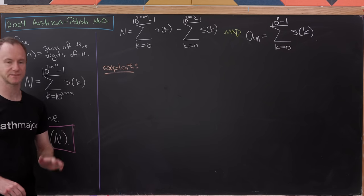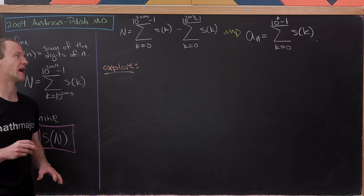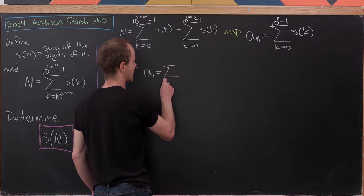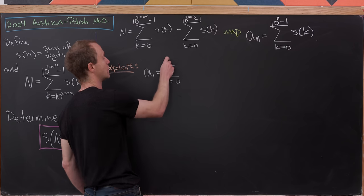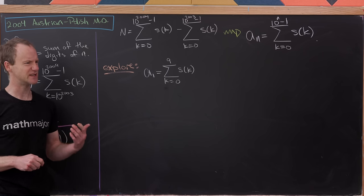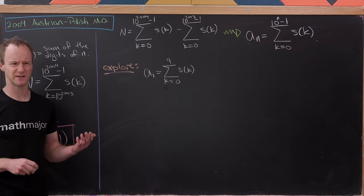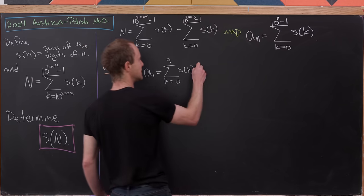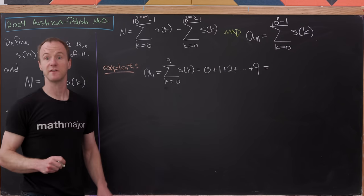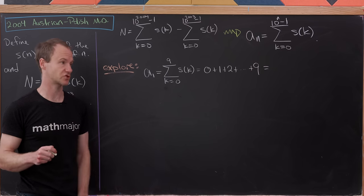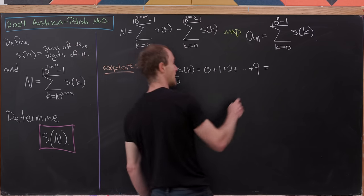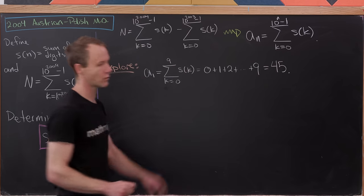Let's explore the first couple of values of this sequence to come up with a reasonable expectation for a closed form, and then prove it using induction. A_1 is the sum as k goes from 0 up to 9 of S(k). The digit sum of one-digit numbers are simply those numbers themselves, so this is 0 + 1 + 2 + ... + 9, which is the 9th triangular number: 9 × 10 / 2 = 45. So A_1 = 45.